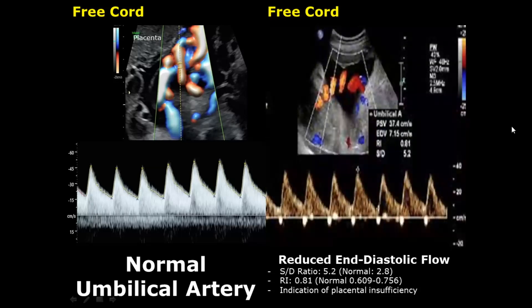Here we have another example of reduced end diastolic flow. The S/T ratio is 5.3 and the resistive index is 0.81.